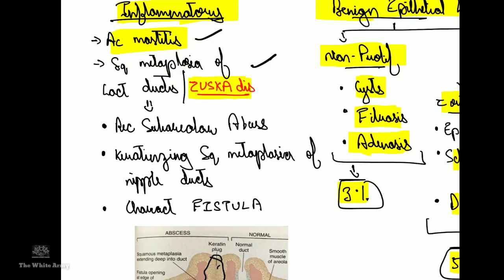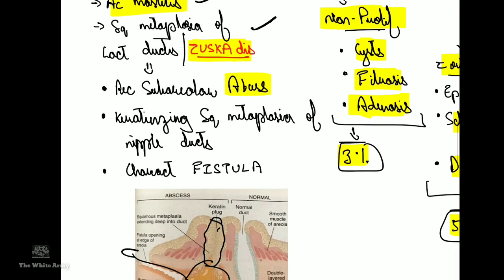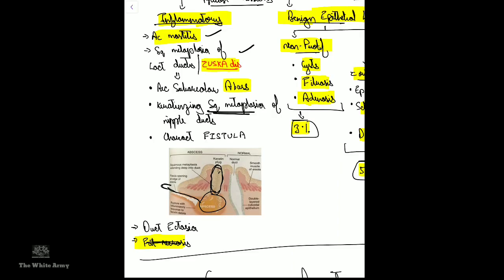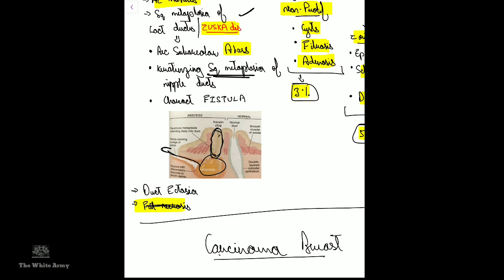Next is squamous metaplasia of the lactiferous duct, or Zuska's disease, which usually occurs secondary to smoking or vitamin A deficiency in women. They present with recurrent subareolar abscesses. Drainage cannot occur through the normal path because squamous metaplasia of the nipple ducts forms a keratin plug, blocking the duct. A fistula is therefore formed for drainage. There is also duct ectasia, which presents as a palpable periareolar mass due to dilation of the lobules and ducts, which store secreted milk.